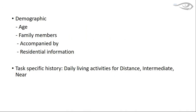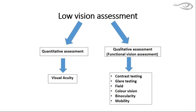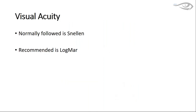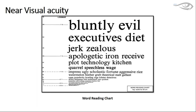Evaluation of low vision is divided into quantitative and qualitative parts. The quantitative part includes visual acuity assessment, while the qualitative part includes functional vision assessment: contrast testing, glare testing, field testing, binocularity, and mobility testing. For visual acuity, the gold standard for low vision is the LogMAR chart — specifically the Bailey-Lovie LogMAR chart and the ETDRS chart. For near visual acuity, the word reading chart is commonly used for low vision patients.